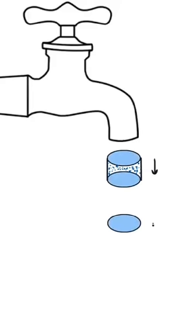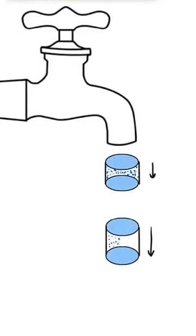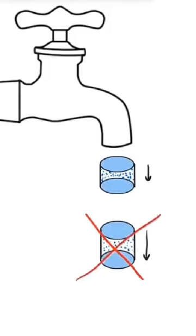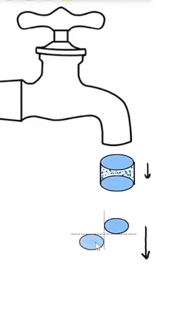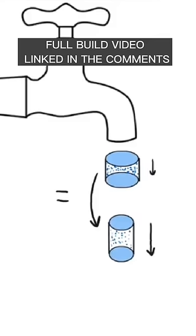If you know the water is moving faster at the bottom, but you're assuming the same cross-sectional area, that would mean more water is passing through at the bottom. You can't just generate water out of nowhere, which is why the cross-sectional area is instead smaller, and the total volume of water passing through each area per second is the same.